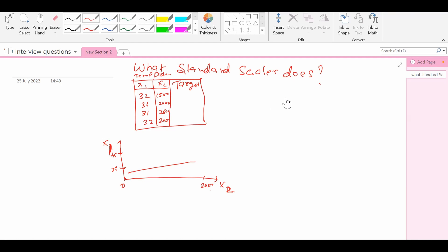In order to get rid of this, we use standard scalar. What standard scalar basically does is first it calculates the mean and the standard deviation for the first column. Let's say this is temperature and this one is distance. So it computes mean and standard deviation for this column and mean and standard deviation for this column.